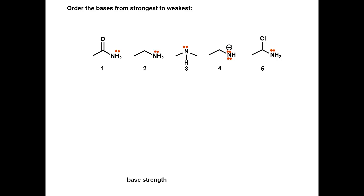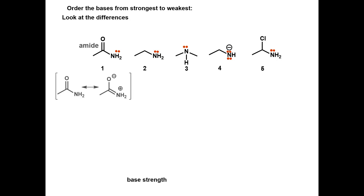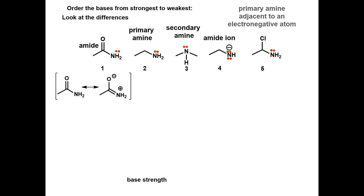Order the bases from strongest to weakest. Look at the differences between the compounds. Compound 1 is an amide, and the electrons will resonate onto the oxygen. Compound 2 is a primary amine. Compound 3 is a secondary amine. Compound 4 is an amide ion. And compound 5 is a primary amine adjacent to an electronegative atom.